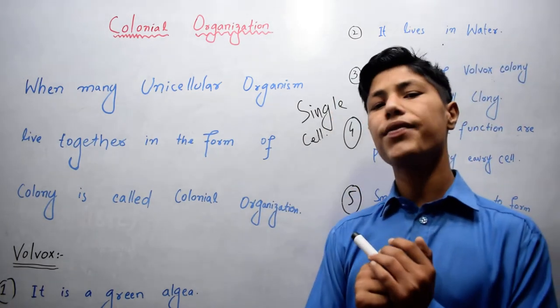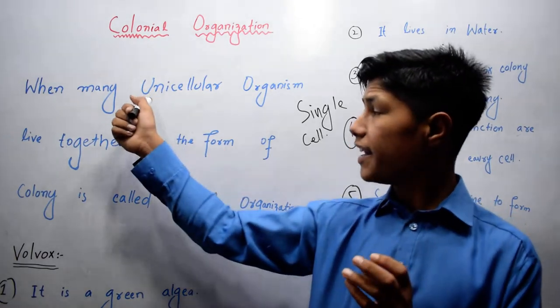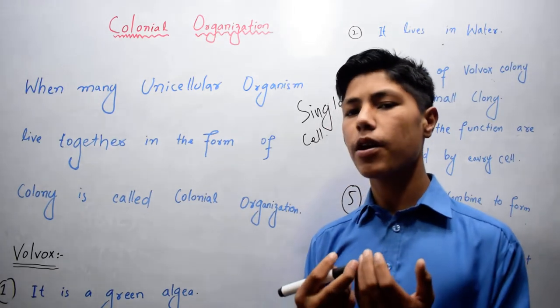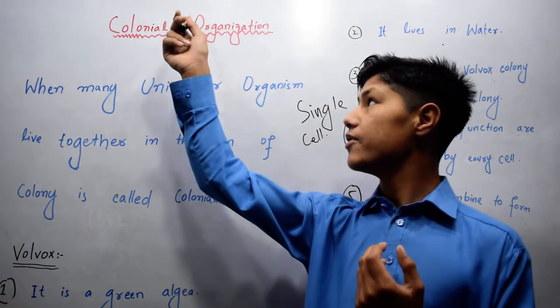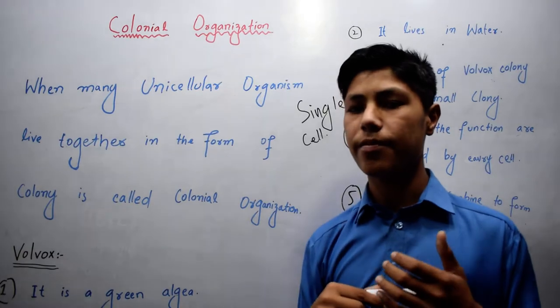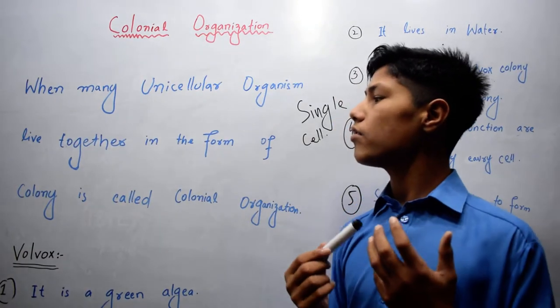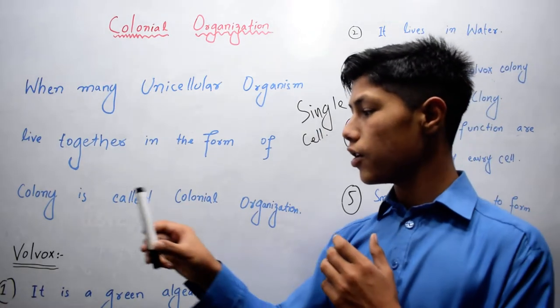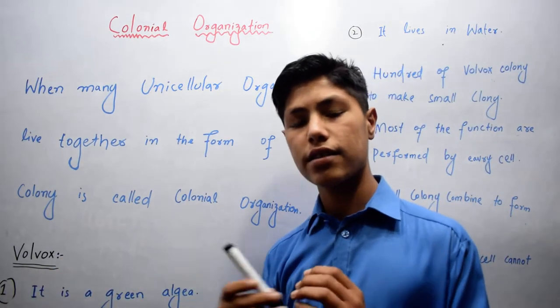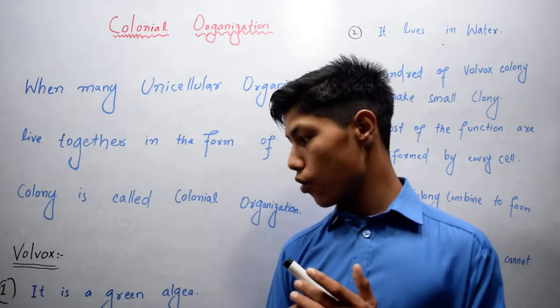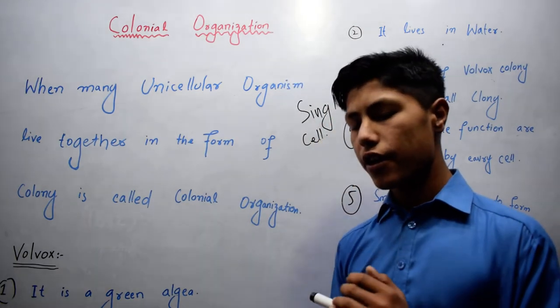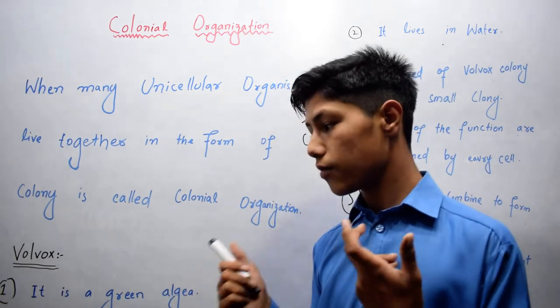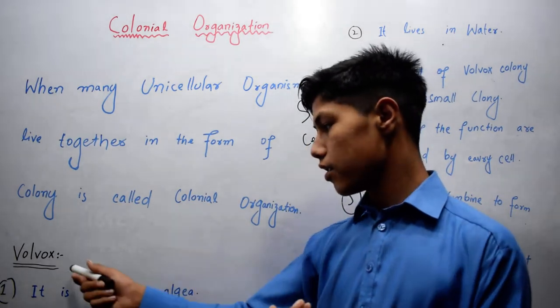Colonial Organization can be defined as when many unicellular organisms live together in the form of colony. Colonial Organization can be explained with the help of this example which is Volvox. Volvox is a green algae, and green algae are protists, so Volvox are protists.